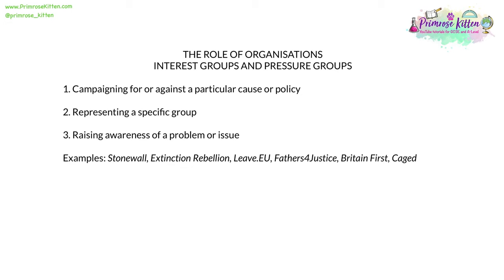Interest groups and pressure groups have several roles. They campaign for or against a particular cause or policy, they represent a specific group of people, and they raise awareness of a problem or issue. Examples include Stonewall, who campaigned for LGBTQ+ rights; Extinction Rebellion, who campaigned on behalf of the environment and against climate change; Leave.eu, who campaigned for Britain's exit from the European Union; Fathers for Justice, who campaigned for the rights of estranged fathers; Britain First, an English nationalist association; and Caged, who campaigned for the rights of retired greyhounds.